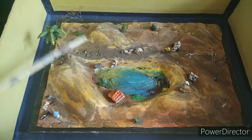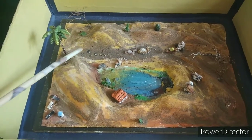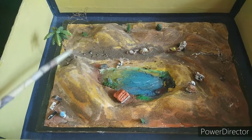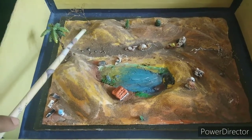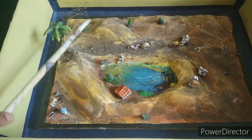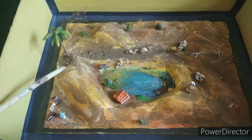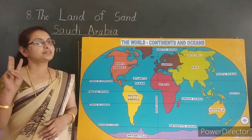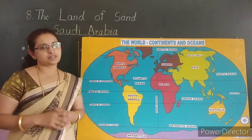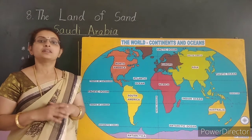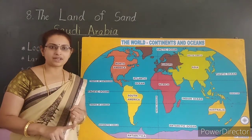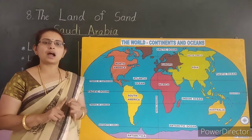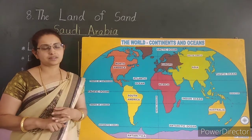In deserts some plants grow, such as palm trees, cactus, etc. There are three types of deserts: hot deserts, temperate deserts, and cold deserts.